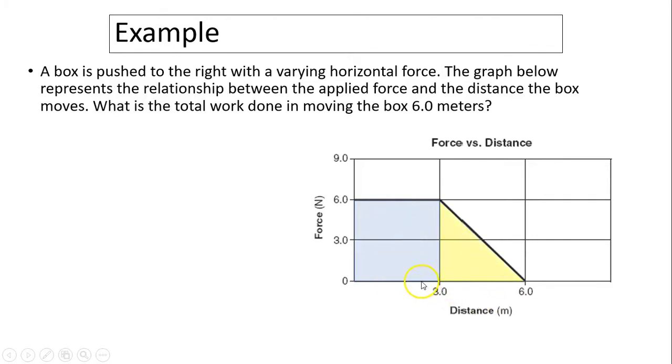So we can figure out the area under this graph. This is a trapezoid. For those of you who are not familiar with the equation for trapezoid, you can use the rectangle plus the triangle. So your area should be 27 joules.